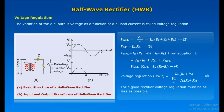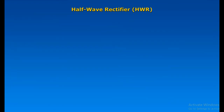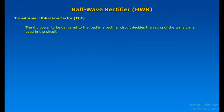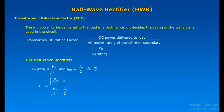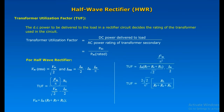Voltage regulation of the Half-Wave Rectifier is given as shown. For a good rectifier, voltage regulation must be as low as possible. Transformer Utilization Factor: The DC power to be delivered to the load in a rectifier circuit decides the rating of the transformer used in the circuit. Transformer Utilization Factor equals DC power delivered to the load divided by the AC power rating of the transformer secondary. For the half-wave rectifier, the transformer utilization factor is given as shown.